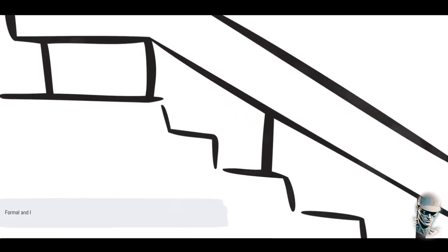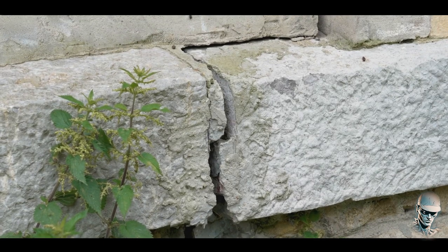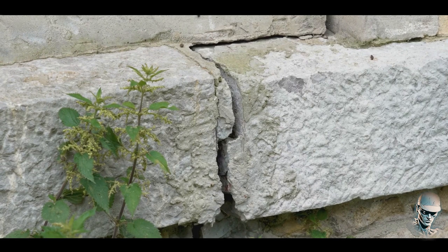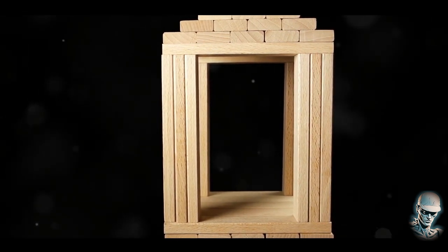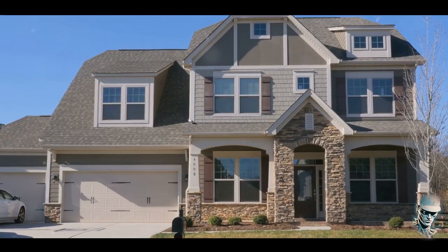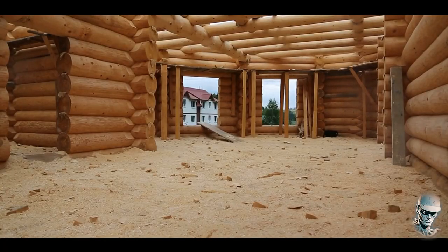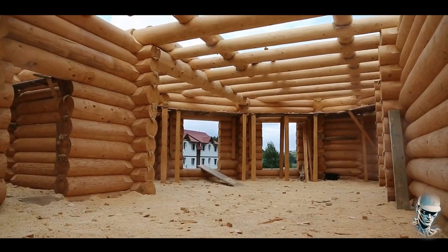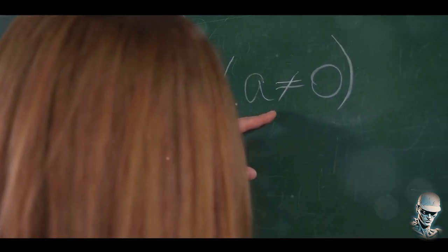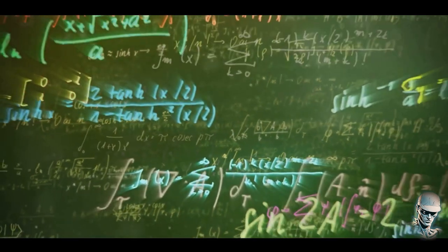Formal and informal fallacies — two sides of the same deceptive coin. Formal fallacies are errors in the structure of an argument, a flaw in the logic itself. They're easier to spot because they violate established rules of deductive reasoning. Think of them as a house built with a shaky foundation — no matter how beautiful the exterior, it's doomed to collapse because the logic is fundamentally flawed. Informal fallacies, on the other hand, often have sound structure but are misleading because they rely on incorrect assumptions or manipulations of emotions or biases. The key difference lies in their nature: formal fallacies are inherently logical errors, whereas informal fallacies are errors of persuasion. Formal fallacies are like mathematical errors — clear-cut and undeniable — while informal fallacies are more subtle, playing on our emotions, our preconceptions, and our assumptions.